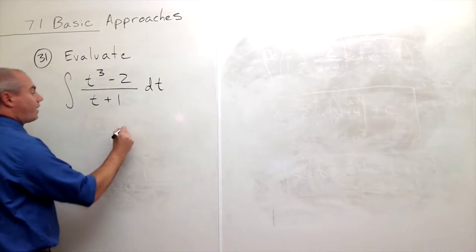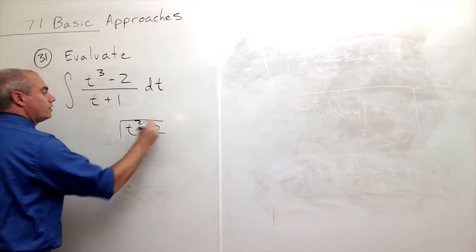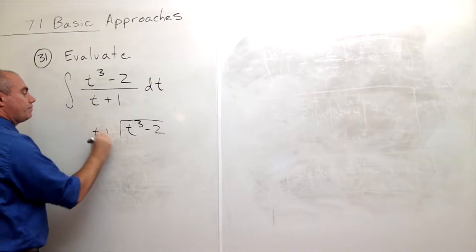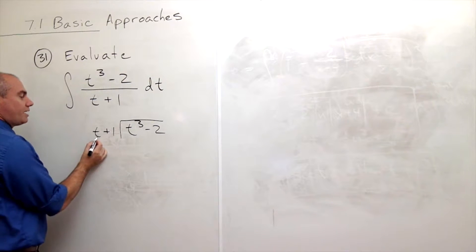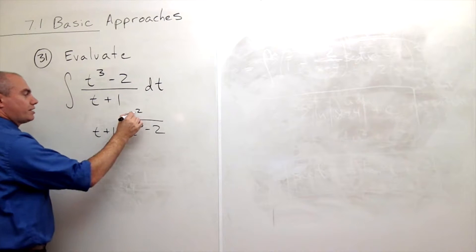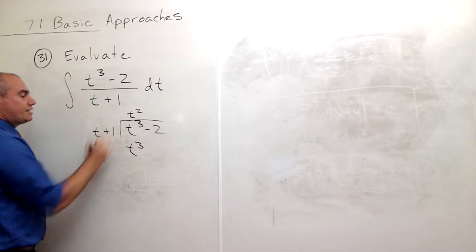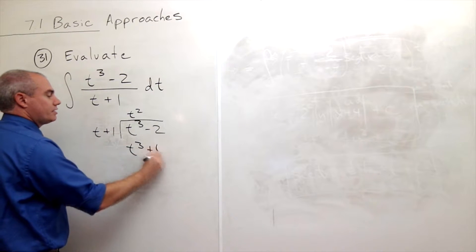What I want to do is I want to divide t cubed minus 2. Let's divide that by t plus 1. Well, how many times does t go into t cubed? T squared times. So now let's multiply by t squared and I get t cubed and t times 1 is t squared.